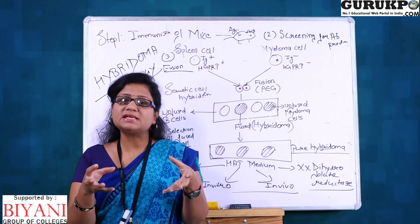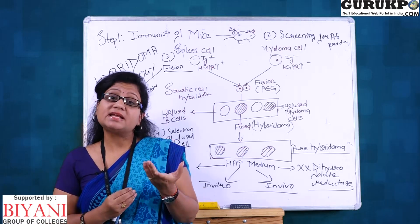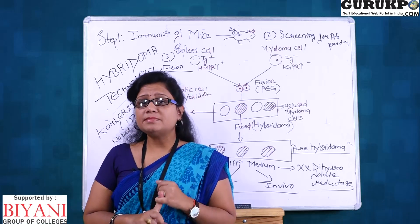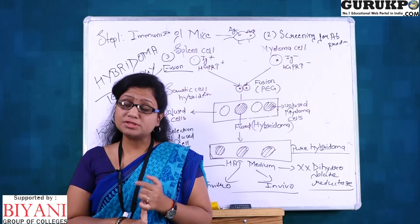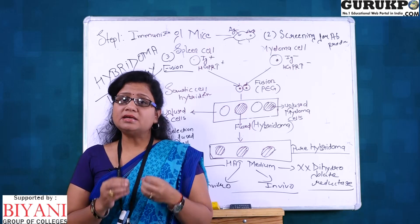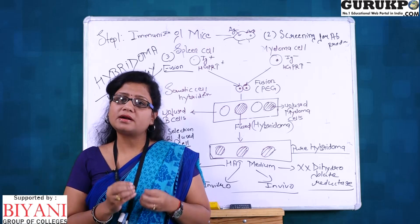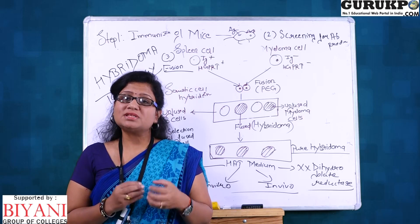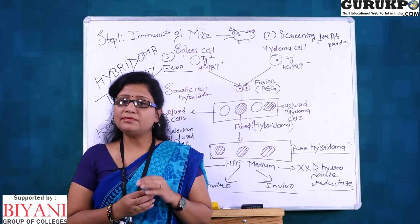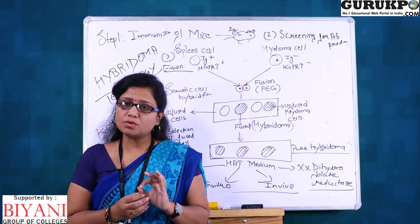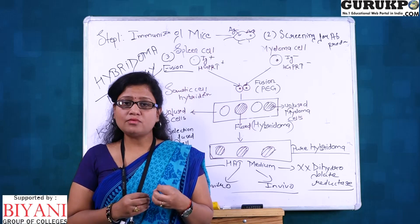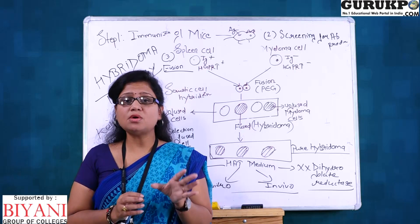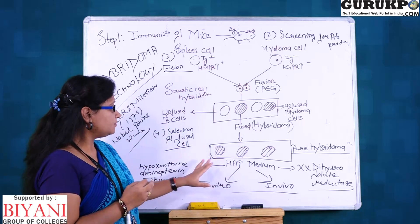For selection, a special selective medium is used which only grows hybridoma cells — this is known as HAT medium. HAT stands for hypoxanthine, aminopterin, and thymidine. Aminopterin is a drug that inhibits dihydrofolate reductase, the enzyme responsible for purine biosynthesis. Myeloma cells can synthesize their own purines via the alternate pathway, but aminopterin — as a drug inhibitor — binds to dihydrofolate reductase and inhibits this alternate pathway for purine biosynthesis.